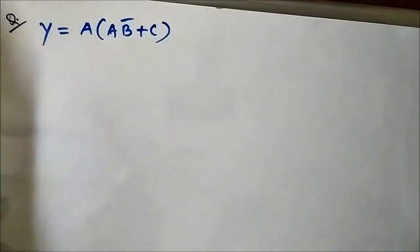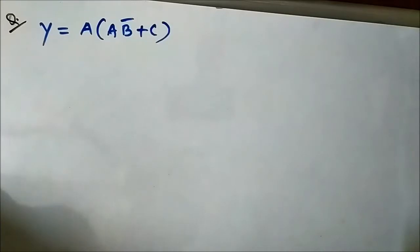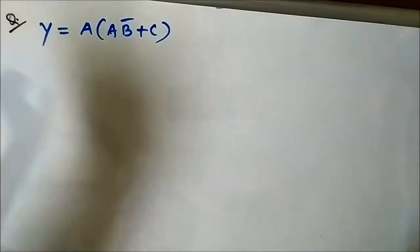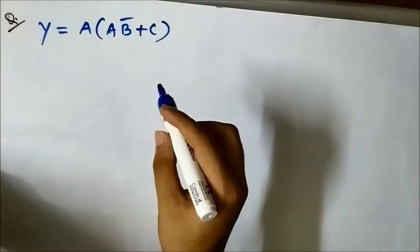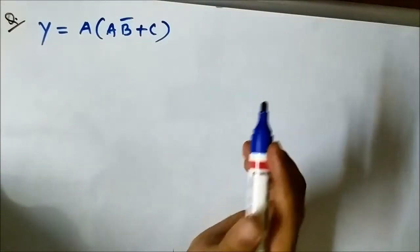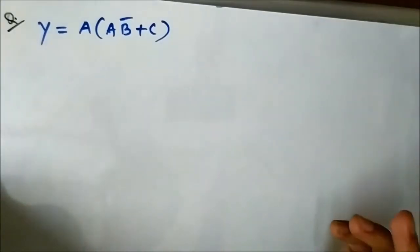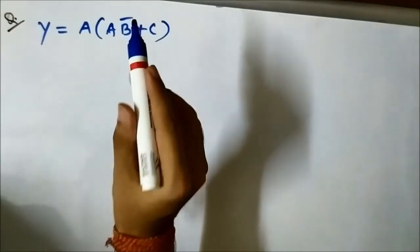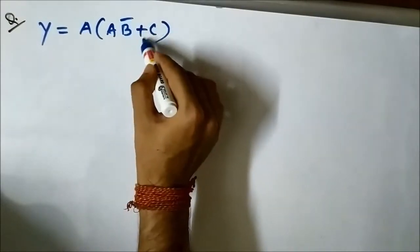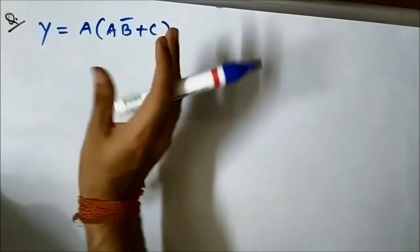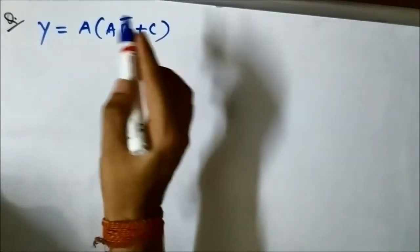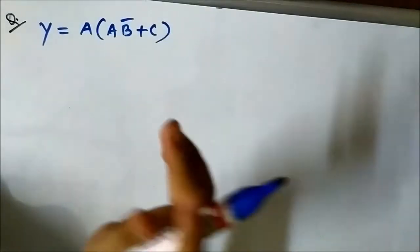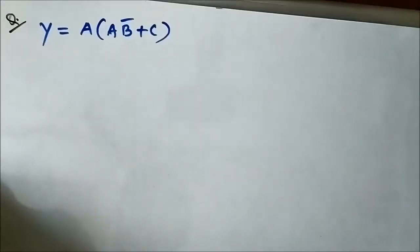Hello friends, here we are with another Boolean expression which we have to implement using NAND gates. To implement this whole expression using NAND gates, we have to convert or modify this expression such that this OR sign gets converted into AND. We have to modify this expression into AND form so that all the variables present are in product form or AND form.